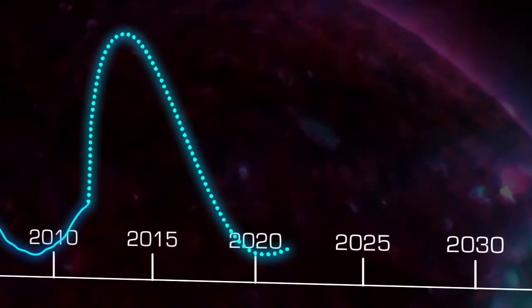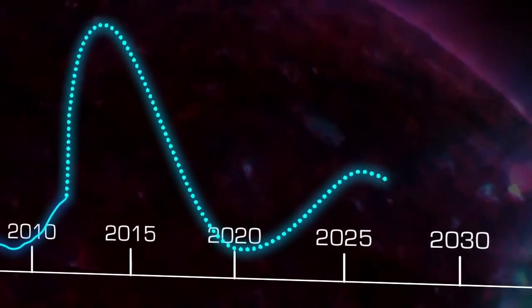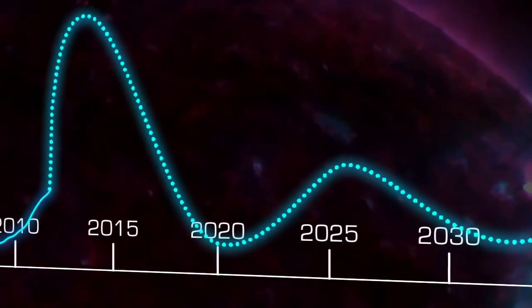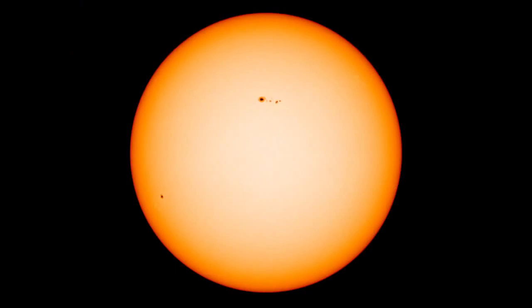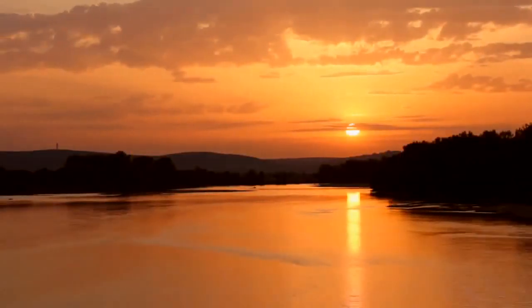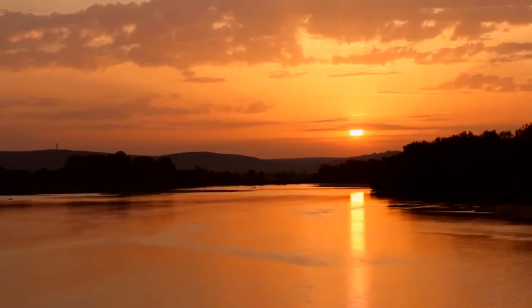The slower than expected progress of this sunspot cycle has led some to speculate that the next sunspot cycle might be very minimal, with few sunspots even at solar maximum. It is still far too early to know, but even if this is the case, it has happened before and isn't something to worry about. It just means that the Sun would briefly be a little closer to the unchanging orb it looks like from the ground.